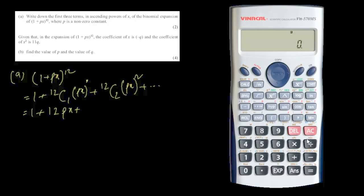New problem: expand (1 + px)^12 to the first three terms. Applying the binomial formula: 1 + 12C1·px + 12C2·(px)². 12C1 = 12, so we get 1 + 12px. For 12C2, use the calculator — the nCr button (above division in orange) gives 12C2 = 66. So the expansion is 1 + 12px + 66p²x² + …